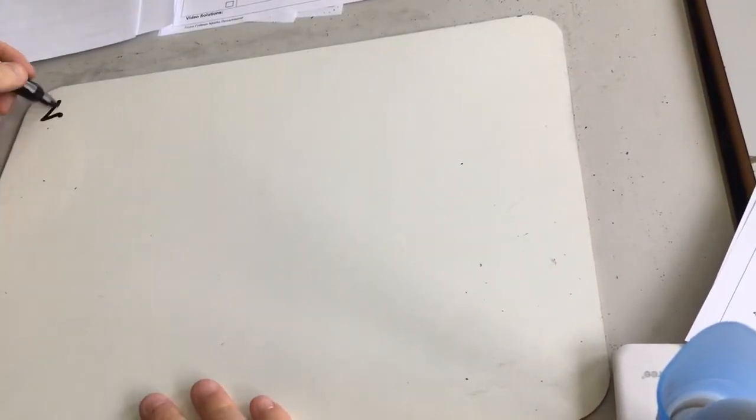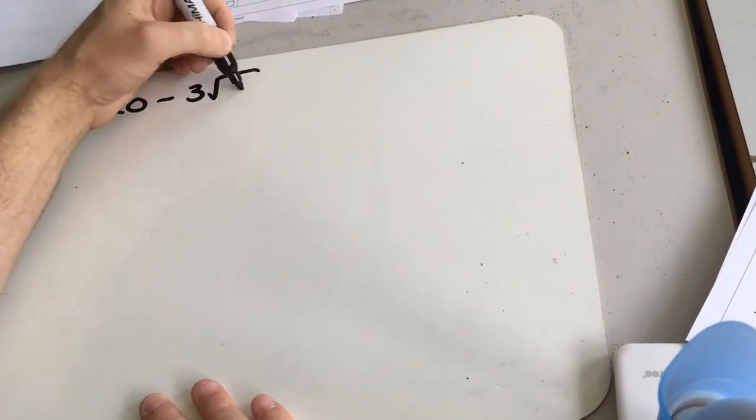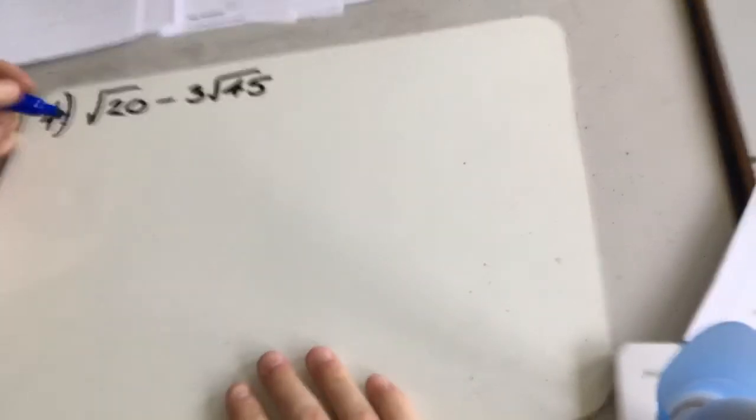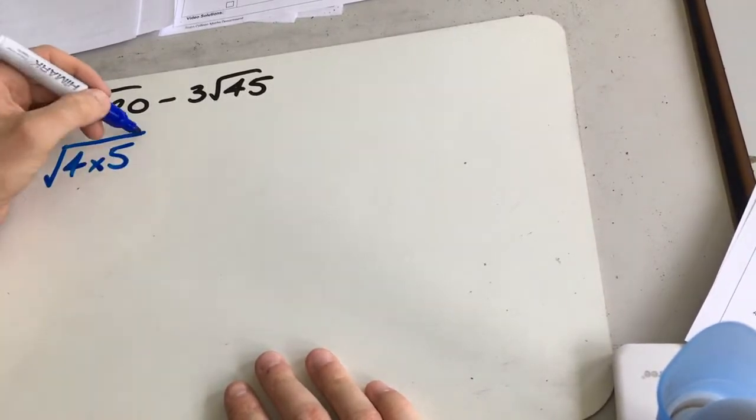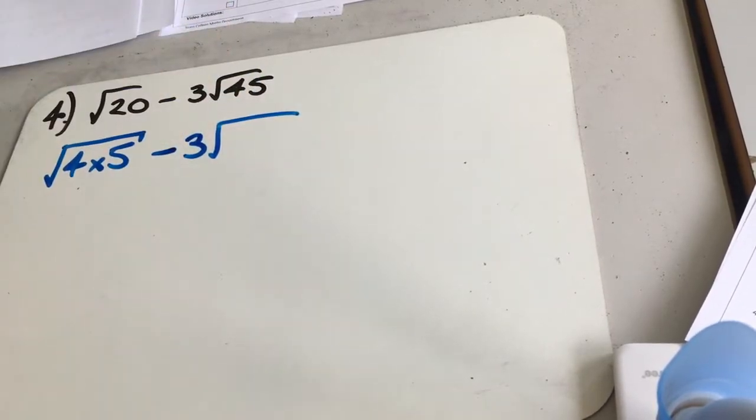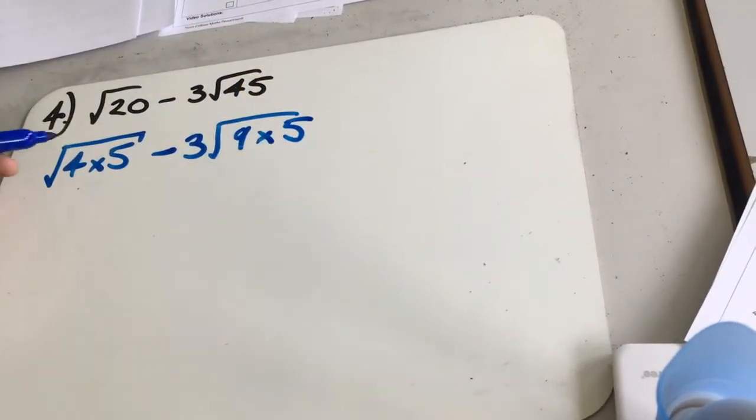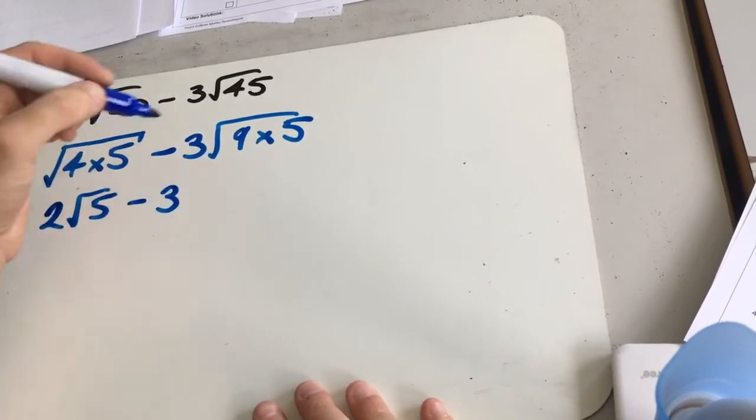Question 4. So we've got root 20 minus 3 root 45. So this time we need to split up both of these separately and then try and simplify them. So root 20, I know we could write out as 4 times 5. Then minus 3 lots of 45. Well, I know that 9 times 5 is 45, so we'll put 9 times 5 in there. We can then split this up. So root 4, I know, is 2.